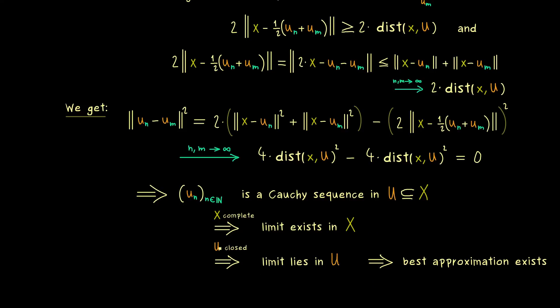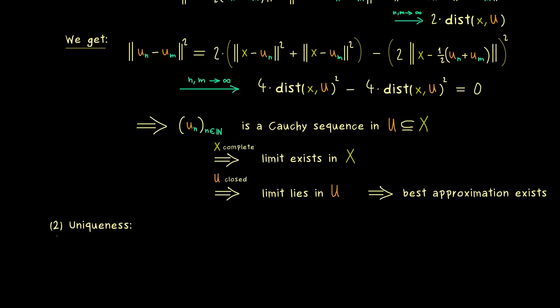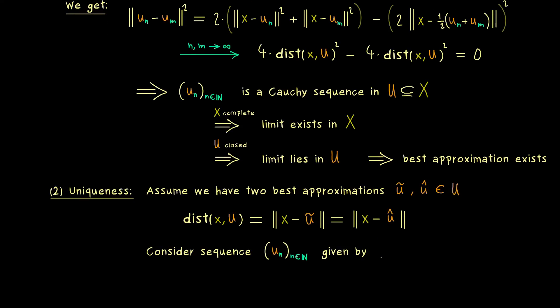So the last part of the proof is now the uniqueness. And maybe surprisingly, this one is not so hard anymore, because we have already done all the work before. And as often for a uniqueness proof, we just have to assume that we have two elements given. So maybe let's call the two best approximations here ũ and û. So both are elements in U and they also satisfy our best approximation formula. Which simply means that the distance x to u is given as the norm of x minus ũ. And in the same way, now also for x minus û. Okay, but now we can just define a sequence, where we just jump from one element to the other, back and forth. So let's call this one u_n again. And now we know it starts with ũ, then it goes to û and so on.